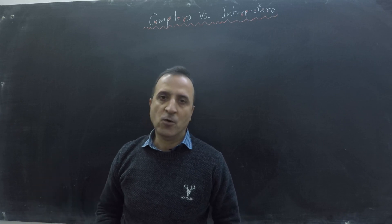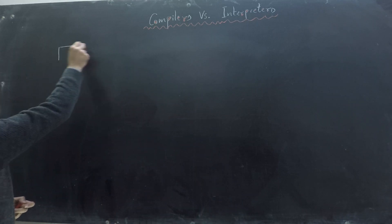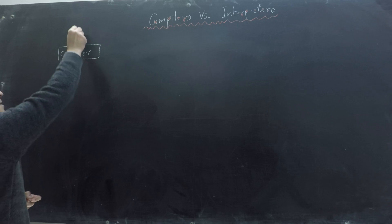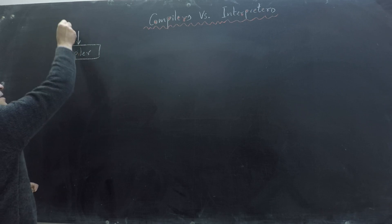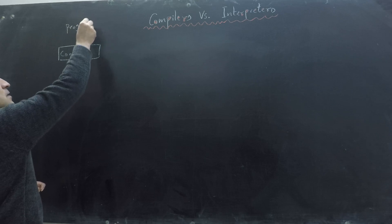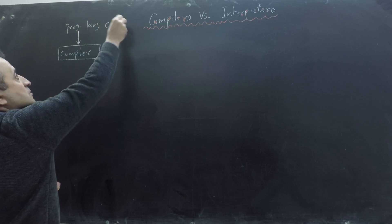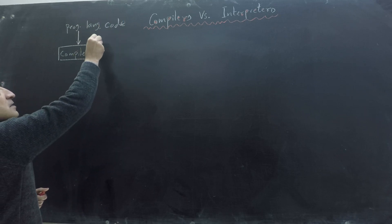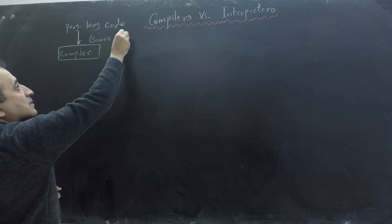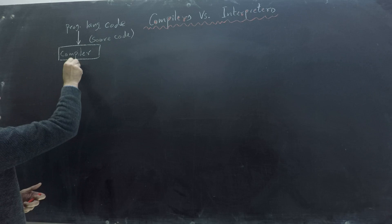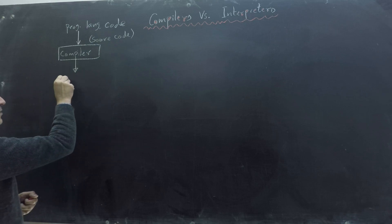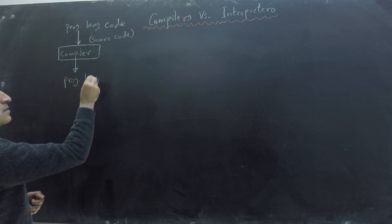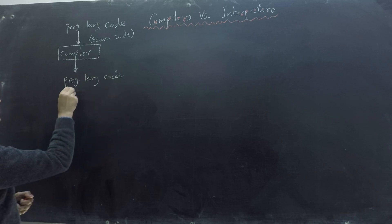Let's make the block diagram of a compiler. Our input is our programming language code, which we refer to as source code, and our output is code in another language, which we refer to as target code.